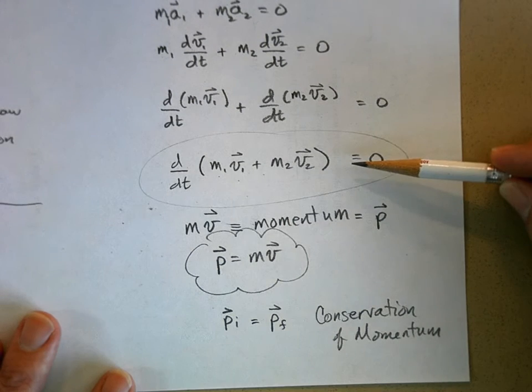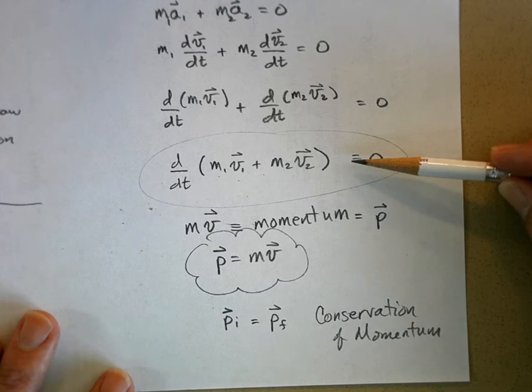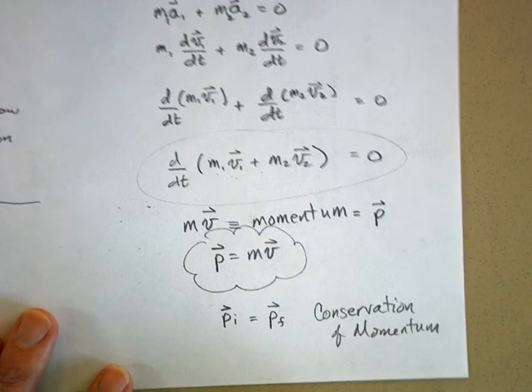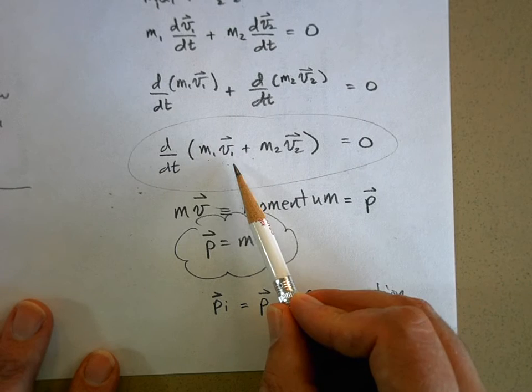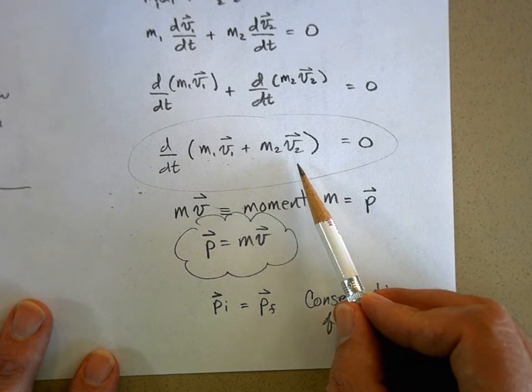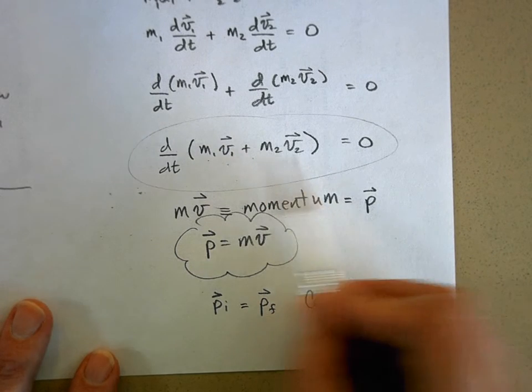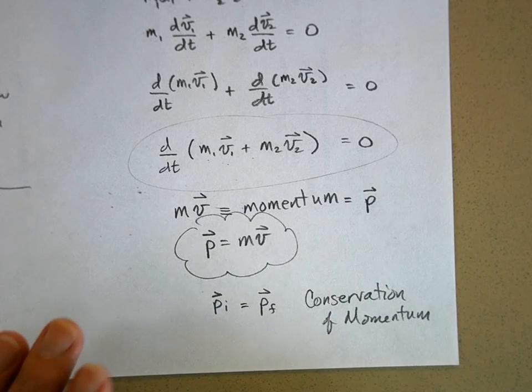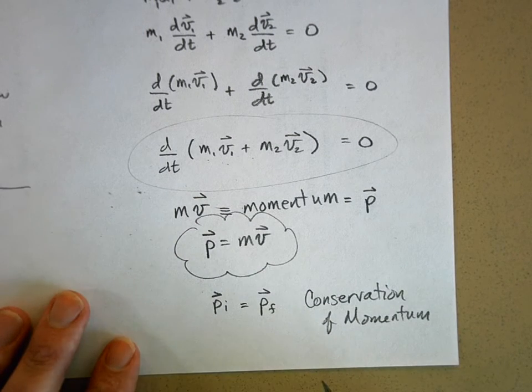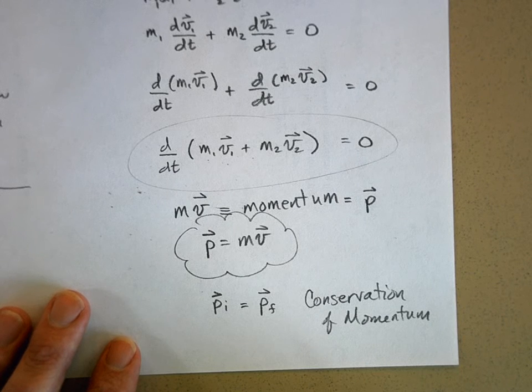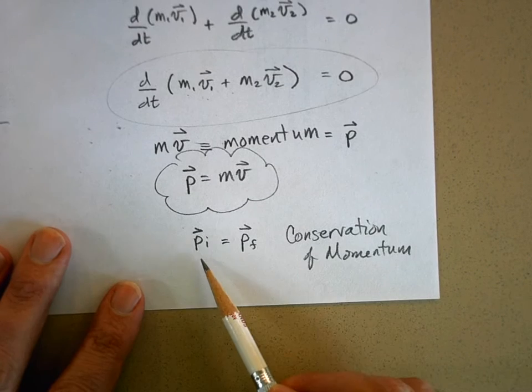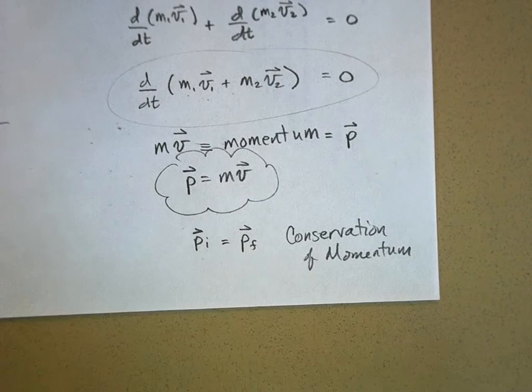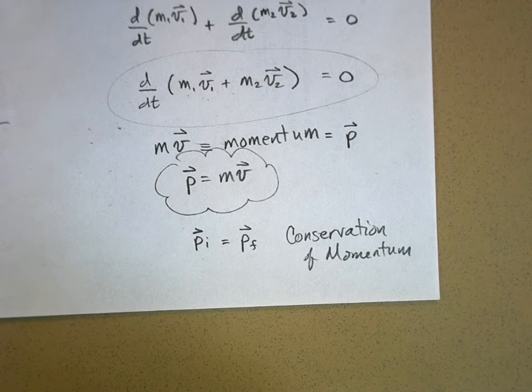We define this mass times velocity as momentum and we said if I add the momentum of object one plus the momentum of object two, and if those two objects are isolated from the rest of the universe, then the total momentum is constant. The initial momentum of the system is equal to the final momentum of the system as long as there's no net outside force acting on your system.